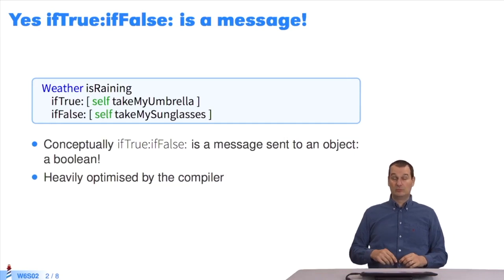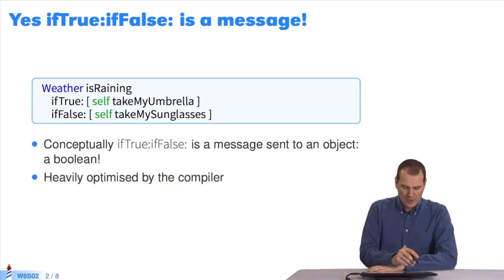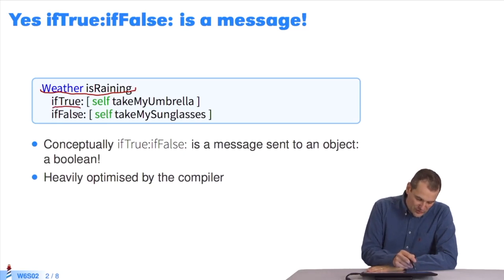In effect, in Pharo, conditions are messages. Here's an example. We have a weather class. Weather is raining. This means that if it rains, if it's true, I'll take my umbrella. If it's false, I'll take my sunglasses. With if-true, if-false, you see the two colons?